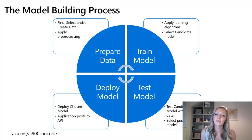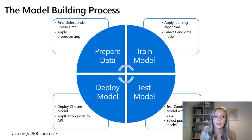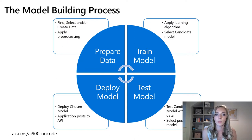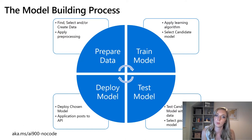Before we dive into demos, let's discuss the modeling process. When you build a machine learning model, you only get to the exciting training part in one portion of a bigger cycle. The process starts with preparing the data — a huge part of building any ML model. This involves selecting data, understanding your data estate, applying lots of pre-processing, handling missing values, identifying data bias or skew, and understanding your data before you can even propose a good hypothesis.